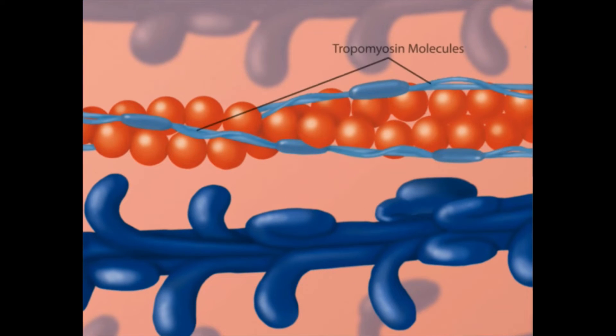In the resting state, tropomyosin molecules cover the myosin binding sites on the actin molecules of each sarcomere, preventing the binding of the myosin heads.